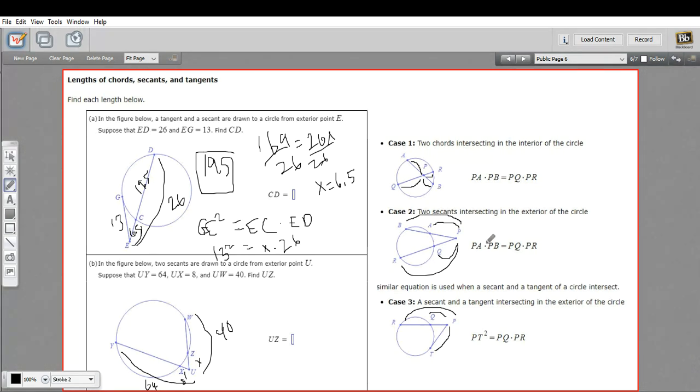So this is the situation where we multiply the part exterior by the whole, and set it equal to the part exterior by the whole. So on this bottom portion, the part exterior is 8, and the whole is 64, so we'll do 8 times 64. And we'll set that equal to the part exterior, well that's what we don't know, so I'll call that X, and the whole is 40.